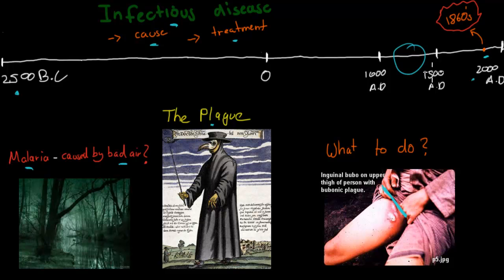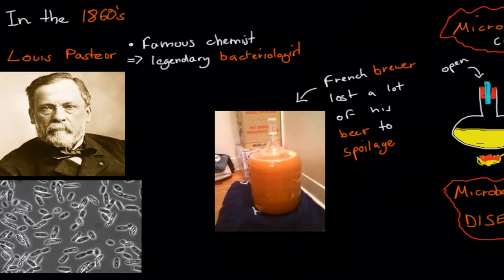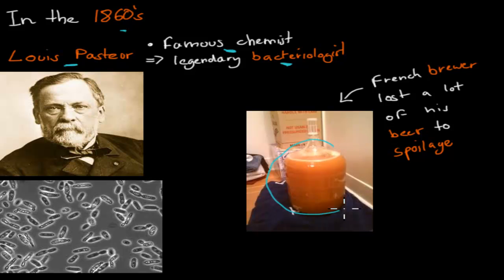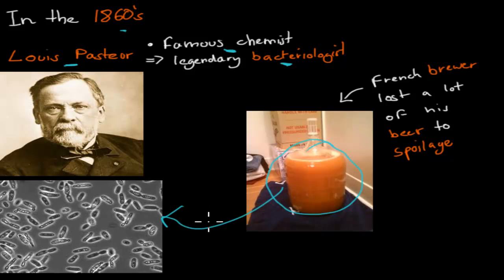Much of that changed in the 1860s because someone called Louis Pasteur came along. He was a famous chemist, but an even more legendary bacteriologist. In 1860, a French brewer came to Louis Pasteur and said, 'Monsieur Pasteur, my beer and wine — all of it is being spoiled. I've got all this harvest and all of it is being spoiled. I want you to figure out why.' So he gave Louis Pasteur the task: find out what is causing my beer to spoil.